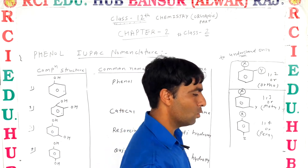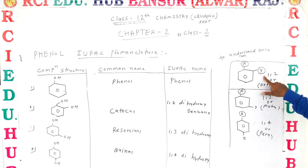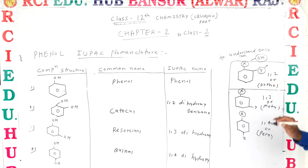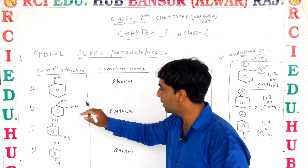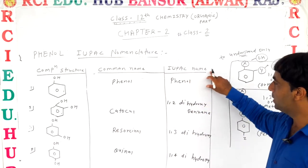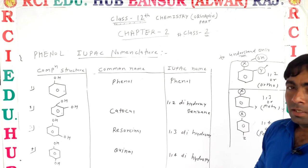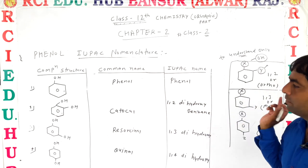And the IUPAC name — two substituents are present here, X and Y, only for understanding. For phenol, one OH group is always constant. The other substituent Y, if you also use an OH group according to this structure, the common name will be catechol, and its IUPAC name will be 1,2-dihydroxybenzene.